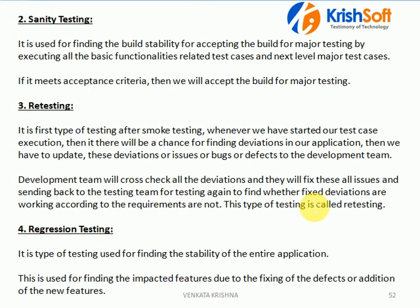Most companies will follow either smoke testing or sanity testing — not both — because both have the same purpose of verifying build stability and whether to proceed with testing on that build. We need to verify the functionalities and confirm whether the build meets the acceptance criteria. The acceptance criteria may vary from company to company, but on average 70 to 80 percent of functionalities working is the standard threshold.